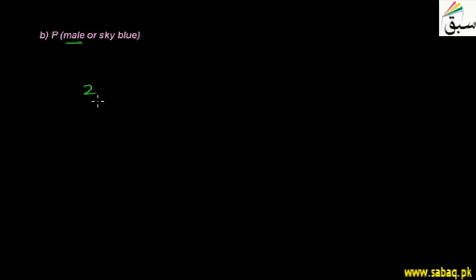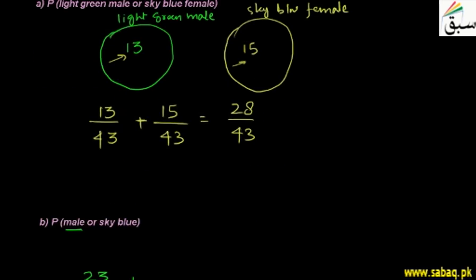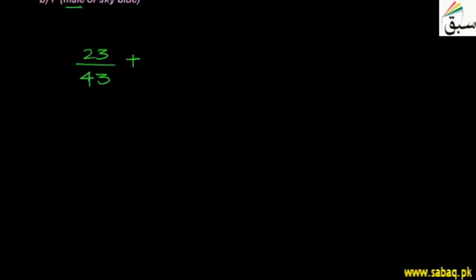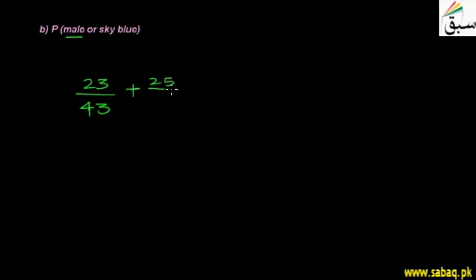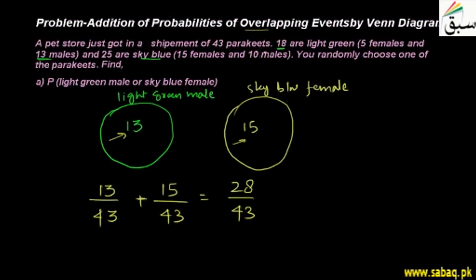Male is 23 out of 43. Then we look at sky blue: the sky blue total is 25, so we have 25 over 43. But we cannot simply add them, because there is overlap — when you count sky blue, you have already counted the sky blue males.